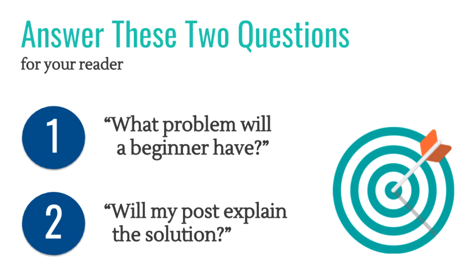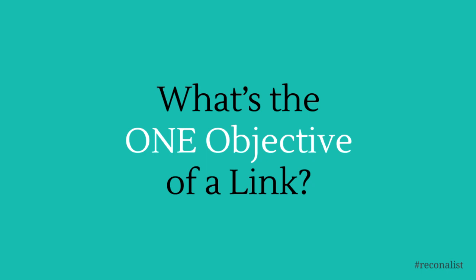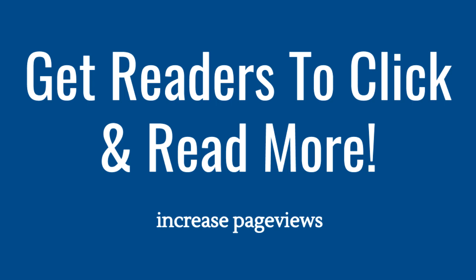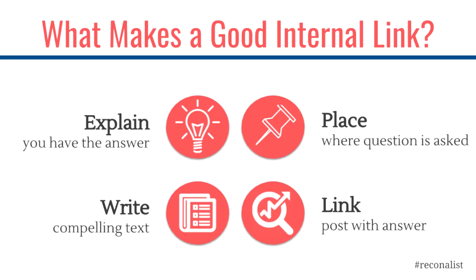Before you select any link, make sure you answer these two questions for your reader. Number one, what problems will a beginner have? And number two, will my post explain the solution? Pretty much any link should have one objective — the only result that really matters — to get your reader to click over to another blog post. What makes a good internal link? Here's the formula that gets the clicks: a great link will be helpful and explain that you have the answer. Don't make people think. Place it where you anticipate the question. It will have compelling anchor text that benefits your reader.